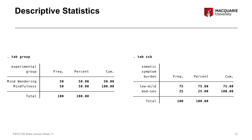The next frequency table covers somatic symptom burden. We have two categories: low-mild versus moderate-severe. The majority of individuals fall into the low-mild category — 75 out of 100 are low-mild, and 25 out of 100 are moderate-severe.